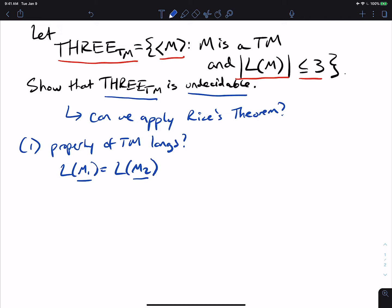Well, if they have the same language, well then they have the same number of strings in the language. So that implies that either both m1 and m2 are in 3TM, either they both have at least four strings, or m1 and m2 are not in 3TM. Because if they are the same language, then they either both have at most three strings, or at least four strings. So what we conclude from this is that this is indeed a property of Turing machine languages.